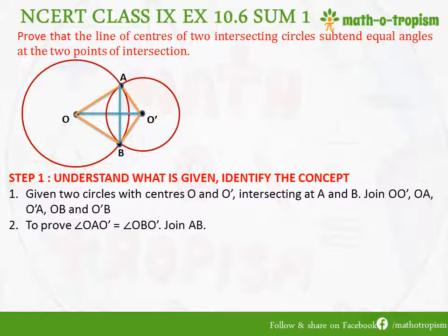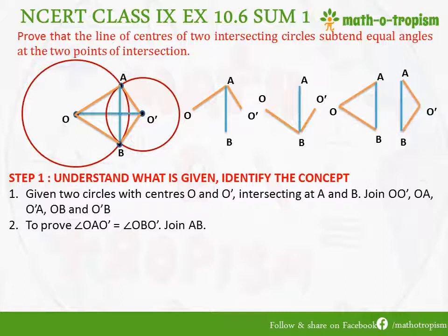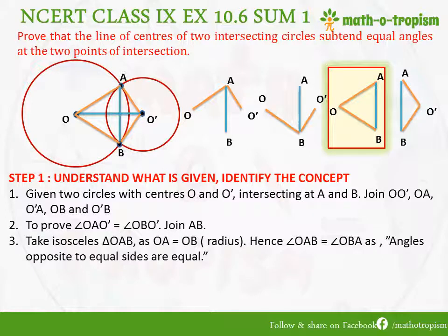We need to prove angles OAO' and OBO' are equal. I can see that AB is dividing angle OAO' into two angles: angle OAB and angle O'AB. Similarly, at point B it is dividing the angle into angle OBA and angle O'BA. There are two triangles formed — triangle OAB and triangle O'AB — and since both are isosceles triangles, their base angles will be equal.